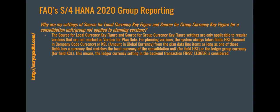This is relating to planning. The next question is: why are my settings of the source for the local currency key figure and source for the group currency key figure not working? These settings are only applicable to the regular version that is not marked as plan data. For a planning version, the system always takes the fields HSL or KSL from the plan data line item, as long as one of those fields has a currency that matches the local currency of the consolidation unit or the ledger group currency.